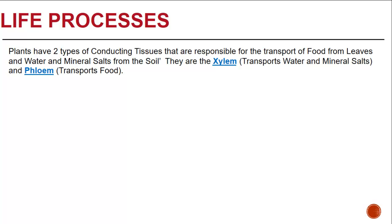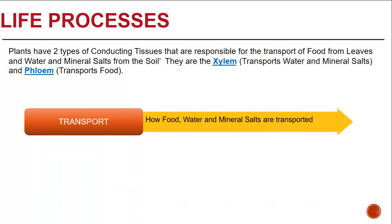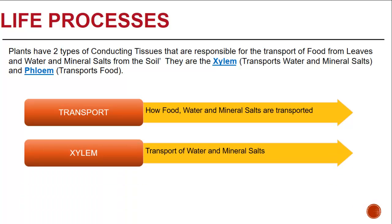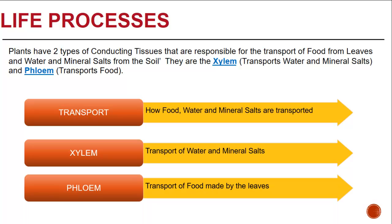Plants have two types of conducting tissues that are responsible for the transport of food from leaves and water and minerals from the soil. These two tissues are the xylem, that transports water and mineral salts, and the phloem, that transports food. Have a look at the diagram showing how food, water and mineral salts are transported, the xylem vessel, what it transports, and the phloem vessel, what it also does.